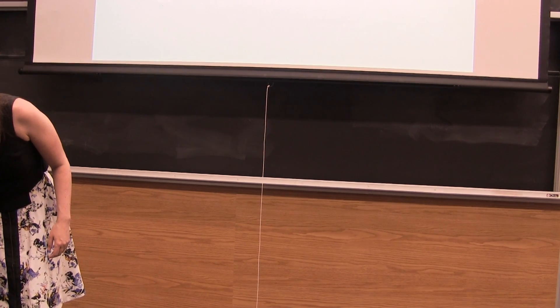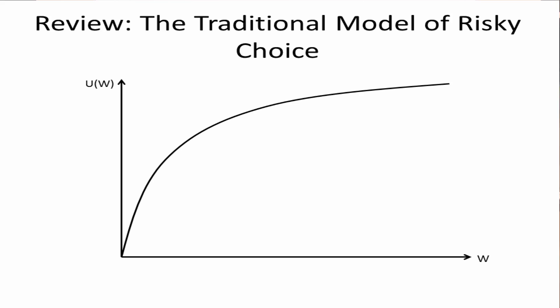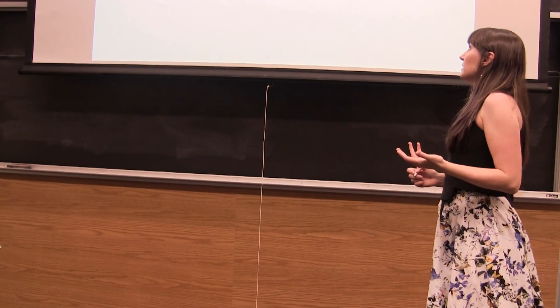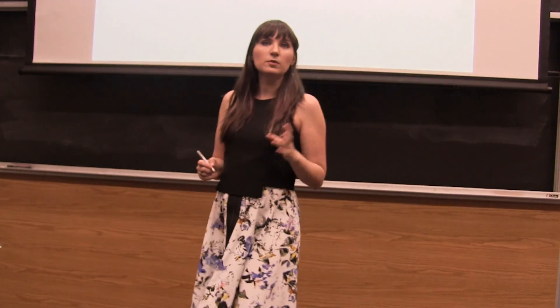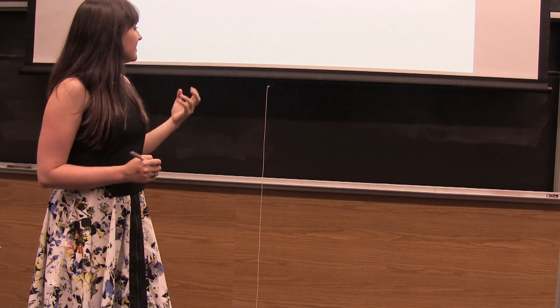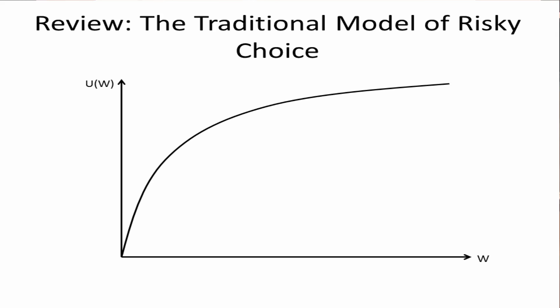Generally speaking — maybe not always, but generally — our utility function looks something like this: it's concave down. We say it looks like this because we know that in most contexts, for most people, people are risk averse, and this model represents a risk averse individual. We can justify this by showing that people have this type of utility whenever they have diminishing marginal utility of wealth. The marginal utility is just the slope, and we can obviously see that the slope gets smaller as we get to higher levels of wealth.